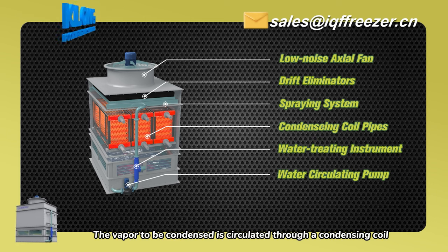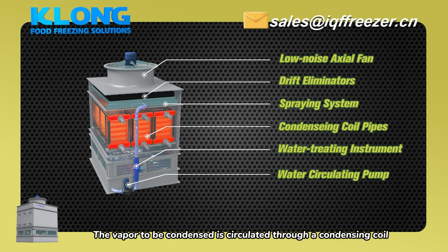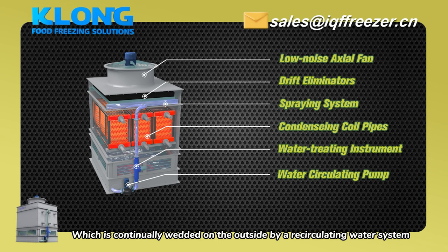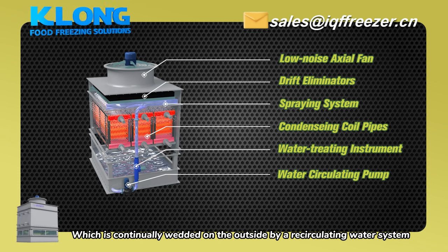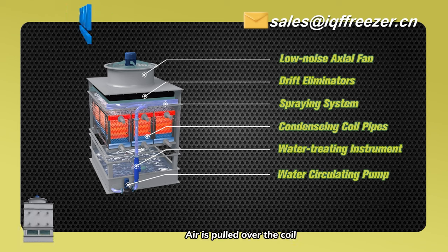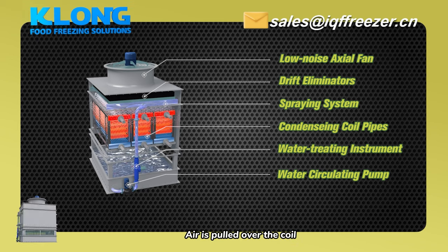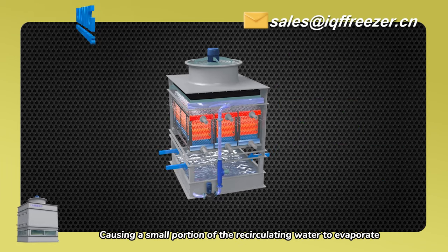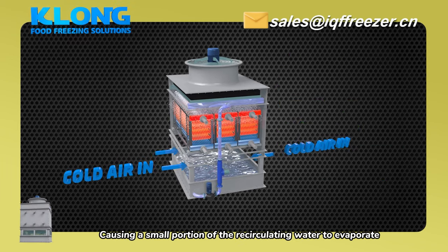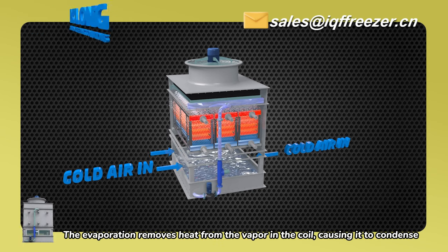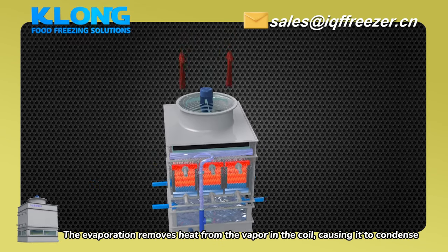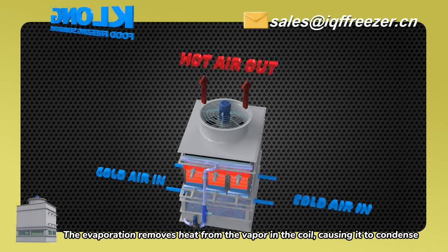The vapor to be condensed is circulated through a condensing coil, which is continually wetted on the outside by a recirculating water system. Air is pulled over the coil, causing a small portion of the recirculating water to evaporate. The evaporation removes heat from the vapor in the coil, causing it to condense.